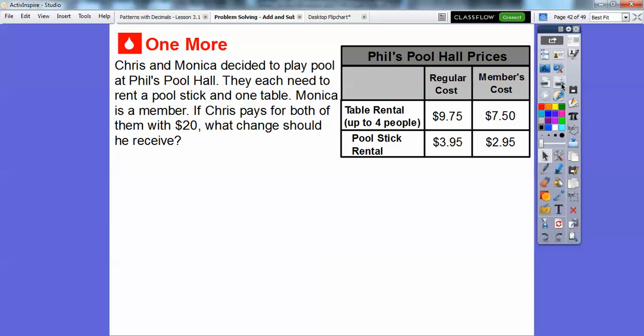Chris and Monica decided to play pool at Phil's Pool Hall. They each need to rent a pool stick and one table. Monica is a member of Phil's Pool Hall. So if Chris pays for both of them with $20, what change should he receive? The regular cost of a table is $9.75. But if you're a member and Monica's a member, they're only going to charge you $7.50. So we're going to do this $7.50 right here. And the pool sticks are $3.95 if you're not a member. And Chris is not a member. And then Monica is a member. So she's going to be charged $2.95 right there. So we're going to calculate the total cost right here.